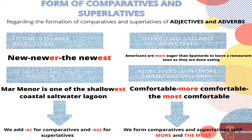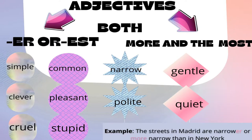For example, Mar Menor is one of the shallowest coastal saltwater lagoons. Other two-syllable adjectives, or adverbs with more than two syllables, form comparatives and superlatives with 'more' and 'most.' Americans are more eager than Spaniards to leave a restaurant as soon as they are done eating. Life is not easy when learning a language, and there are adjectives which can have both endings or 'more/most' when forming the comparatives and superlatives, as you can see in the chart.